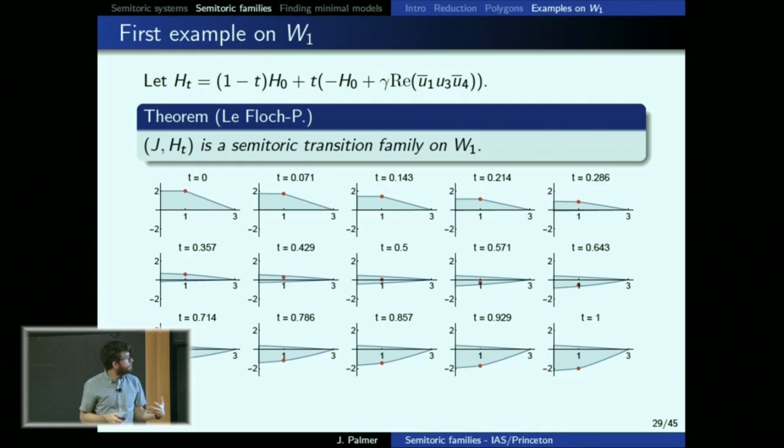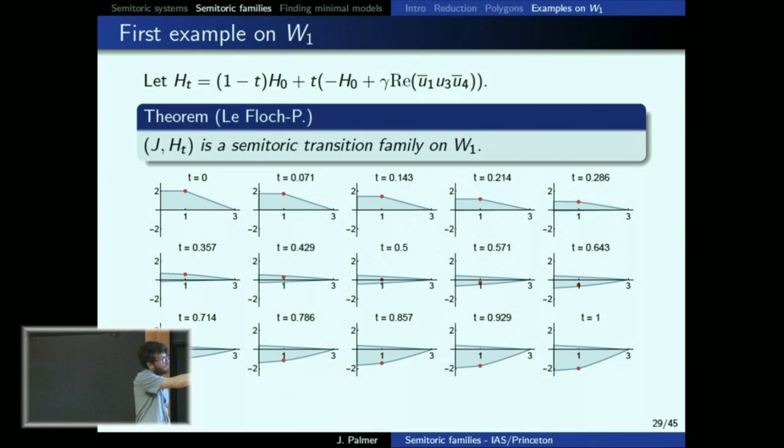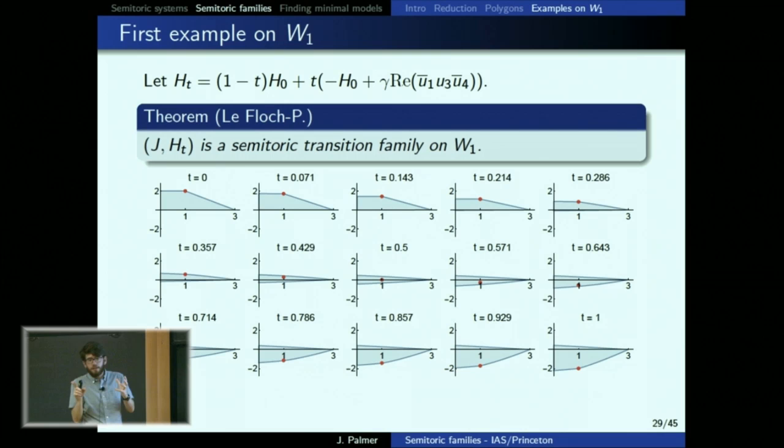We proved that this works: it's a semi-toric transition family. Here are some pictures: it starts with no focus-focus points as the toric system, time runs along, and eventually one of these points jumps across the middle to crash into the bottom. At t=0.5 for instance, we have a new semi-toric system that hadn't been found before. You continue and it crashes into the bottom, ending with something that, like the coupled angular momenta, is a semi-toric system without focus-focus points so you can associate a polygon to it.